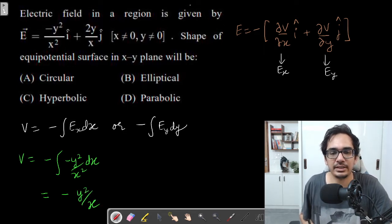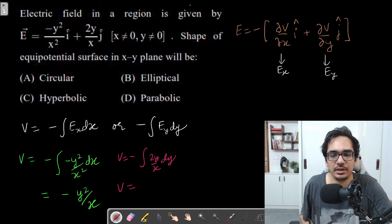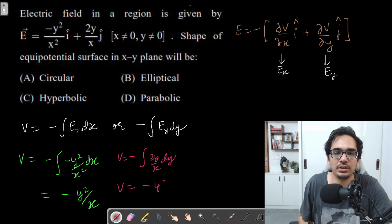Now if you do it for the right side, V equals minus integral Ey dy. So Ey is 2y by x into dy. Just integrate with respect to y. It will be 2y squared by 2, and minus also, so minus y squared by x. Both equations will give you the same result.